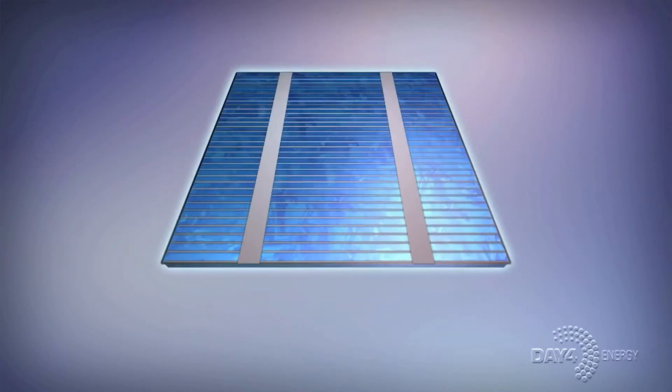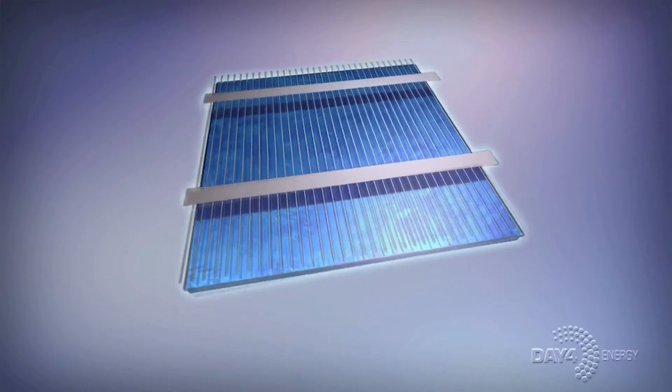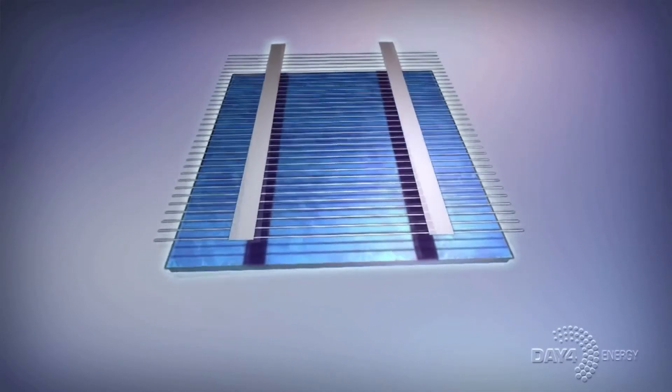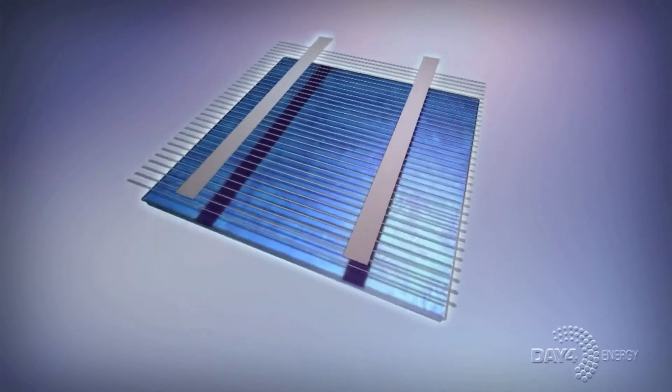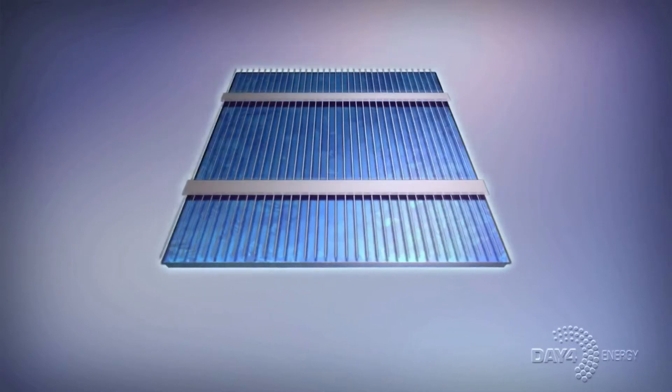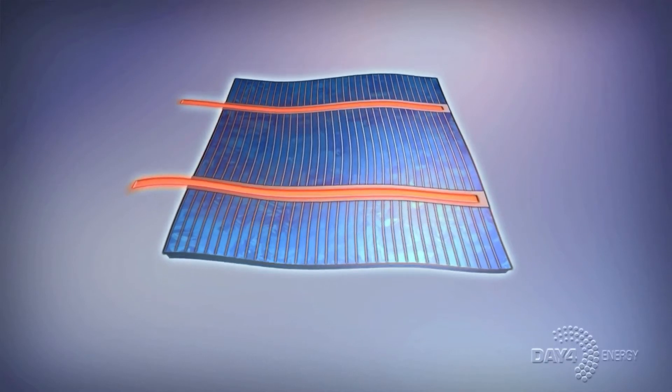This traditional method creates three major challenges. One, the thick fingers and bus bars typical of conventional solar cells increase the amount of shade on the cell surface, reducing the amount of light collected and converted into energy. Two, copper wires called ribbons that conduct electrical current from cell to cell must be soldered to the bus bars.